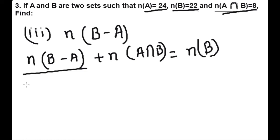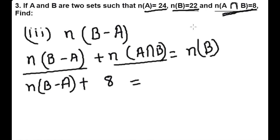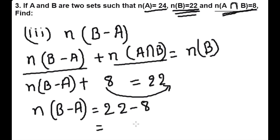We have to find B minus A. The number of elements of B is 22. We will transfer the intersection term to the right side, so B minus A equals 22 minus 8, which is 14. This is our answer.